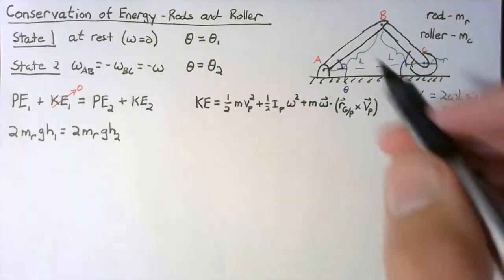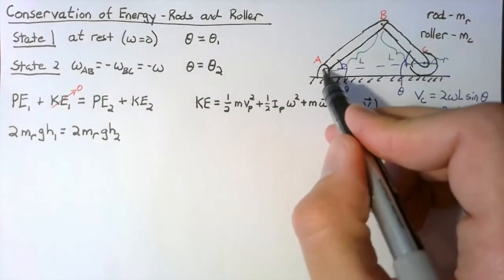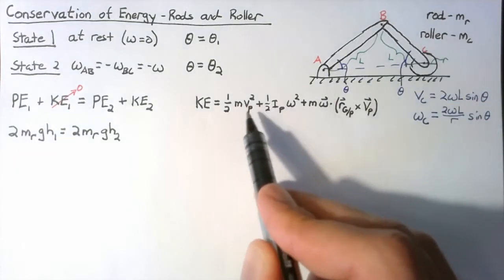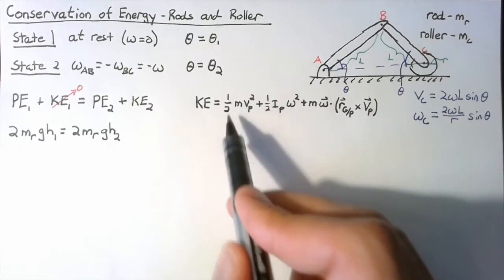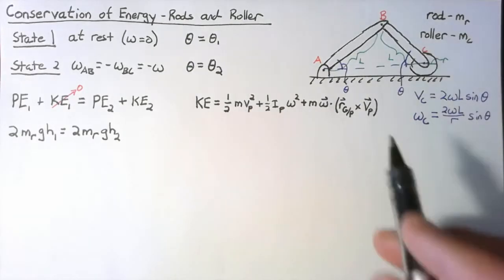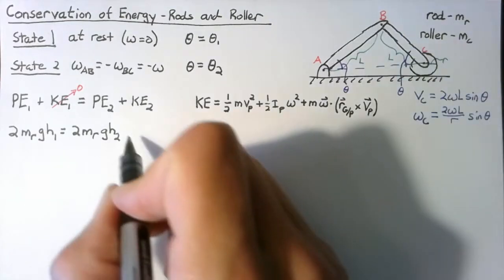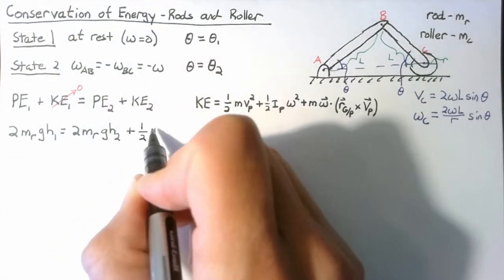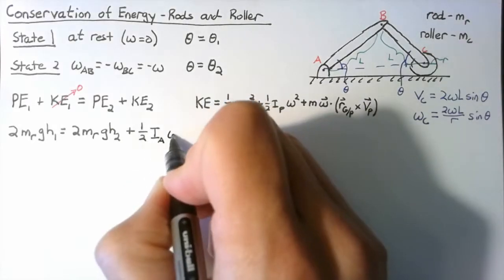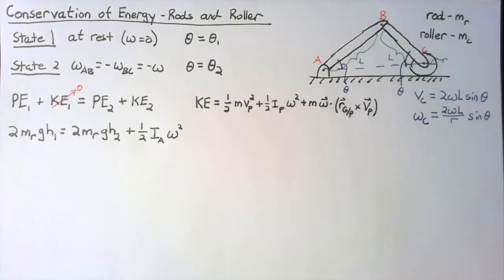For our first body, rod AB, we choose point A. The reason is that this makes the velocity of the point zero, so we can ignore the first term and the last term since both are multiplied by vp. All we end up with for the kinetic energy of rod AB is one-half times the moment of inertia of the rod about A times omega squared.